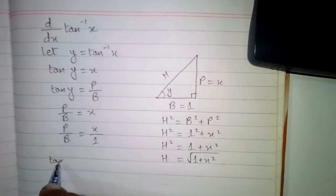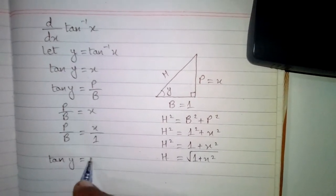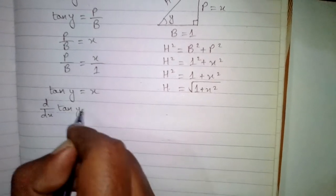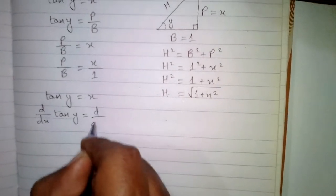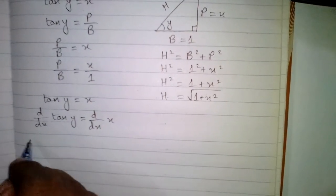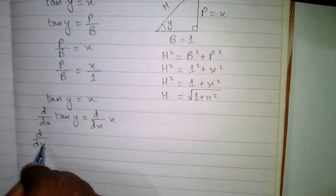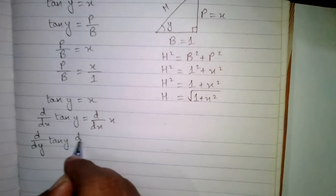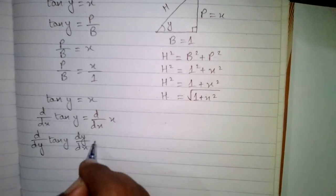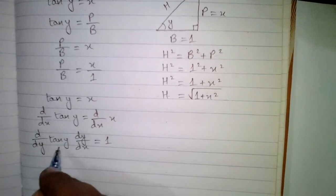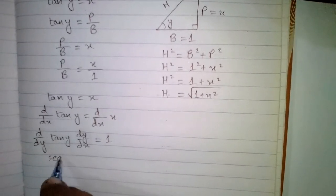Since tan y is equal to x, we take the derivative of both sides with respect to x. So d/dx of tan y is equal to d/dx of x. To find the derivative of tan y we apply the chain rule: d/dy of tan y multiplied by dy/dx equals 1. The derivative of tan y is sec squared y.